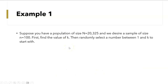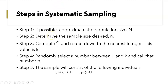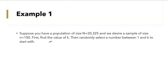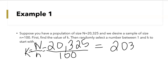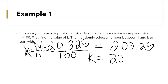For example, suppose you have a population of 20,325 and desire a sample size of n equals 100. To find K, you do the population size divided by the sample size and round down. So 20,325 divided by 100 is 203.25, which rounds down to K equals 203.